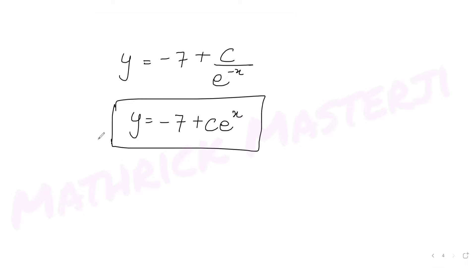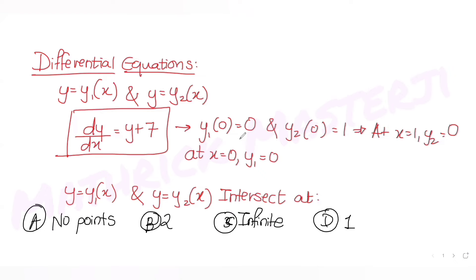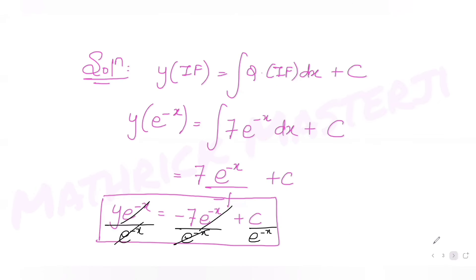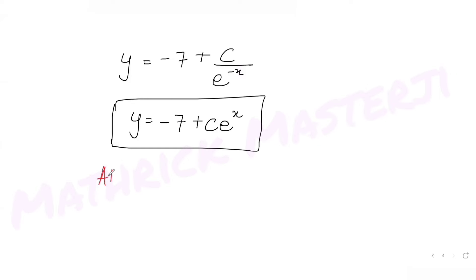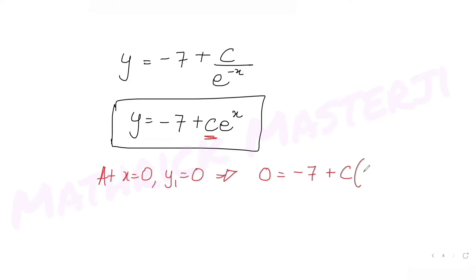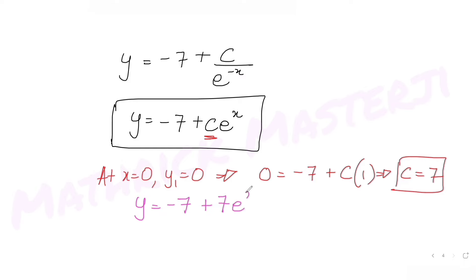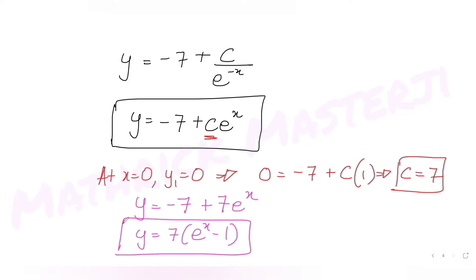Now applying the first condition: at x = 0, y1 = 0. Substituting: 0 = −7 + C · e^0 = −7 + C, so C = 7. Putting this back into the solution gives y1 = 7e^x − 7. That's equation 1.